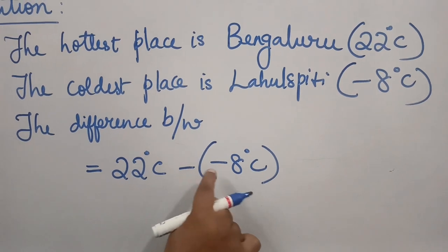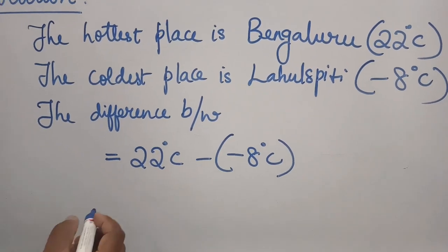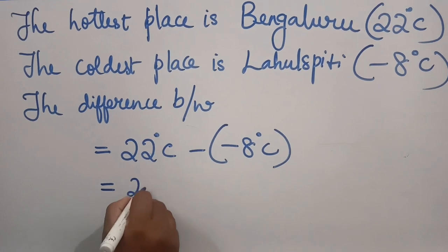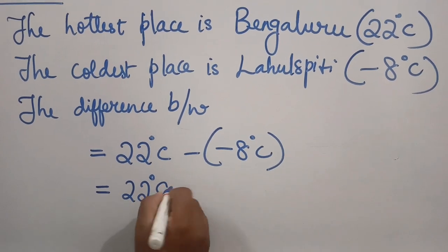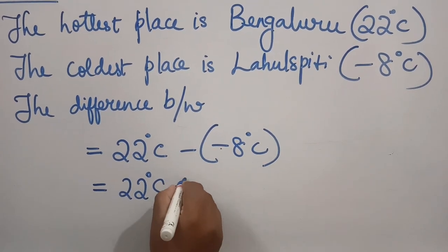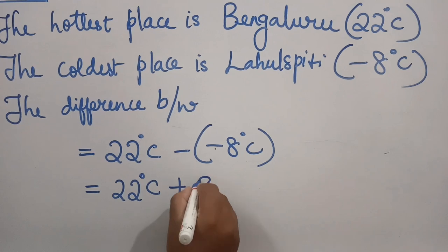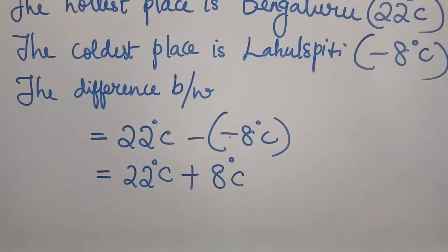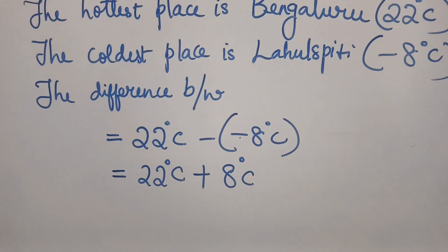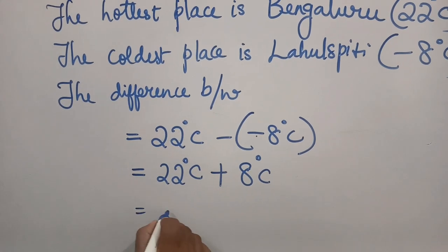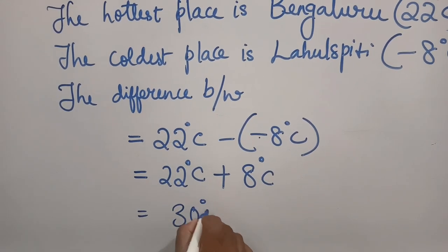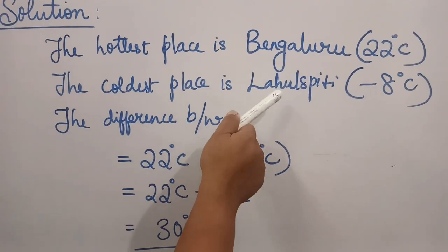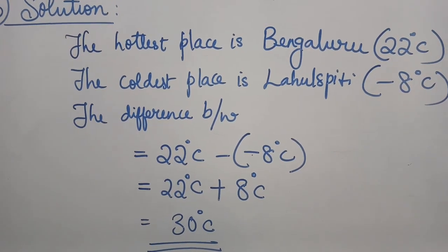These are two different signs, so we use a bracket. 22 degrees Celsius minus minus 8 degrees Celsius — minus and minus is plus — so 22 plus 8. What is 22 plus 8? It is 30 degrees Celsius. So the difference between Bengaluru and Laul Spiti is 30 degrees Celsius.